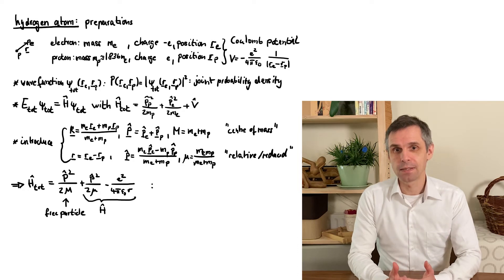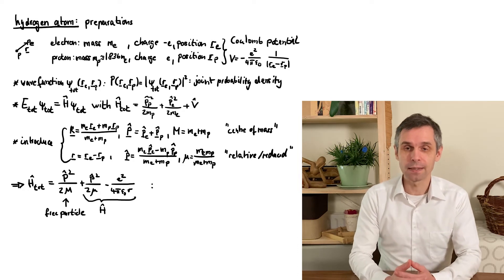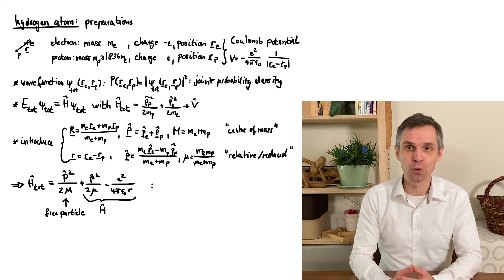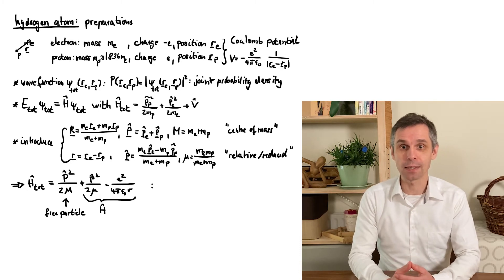And the second one describes an effective single particle of reduced mass μ which moves in three dimensions and is attracted to the origin by the Coulomb potential.